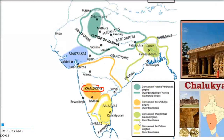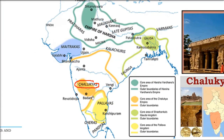Let me tell you who the Chalukyas and Pallavas are — these are two different empires. The region I am showing you for the Chalukyas covers this whole area, and the shaded part is the core area of the Chalukya empire. The yellow boundary is the outer boundary of the Pallavas, and the shaded portion inside is the core area of their kingdom.